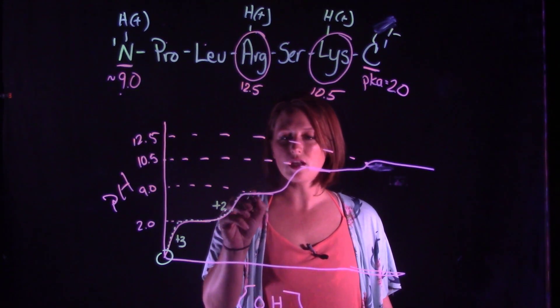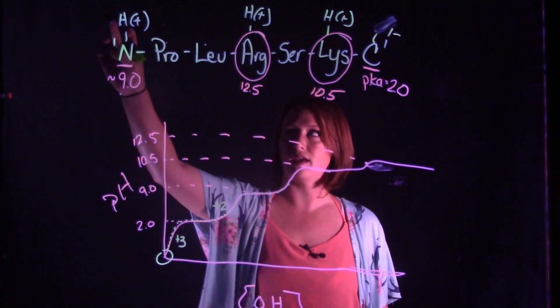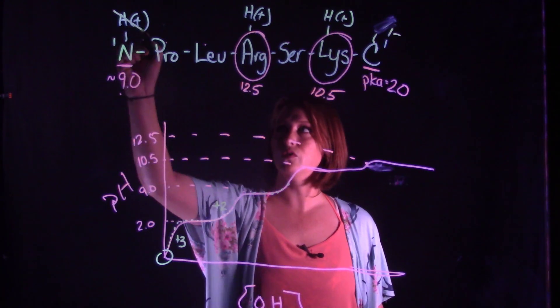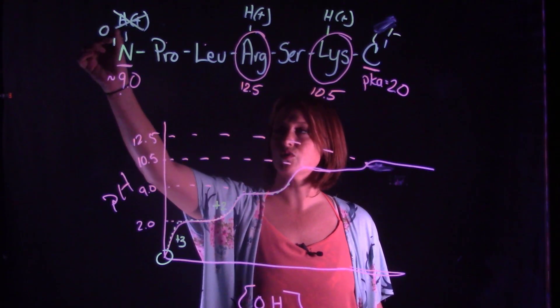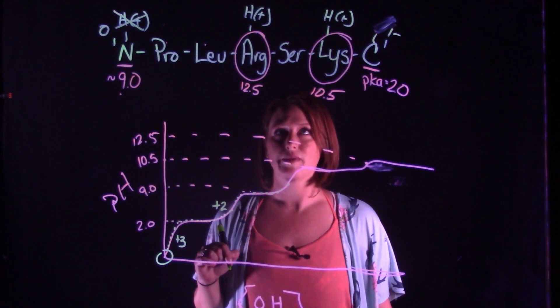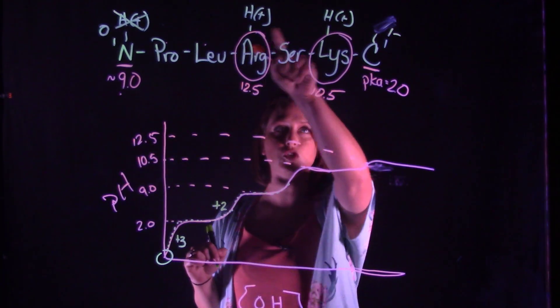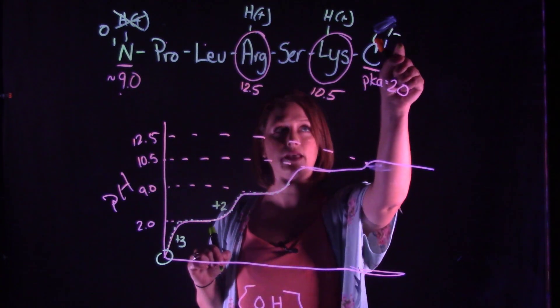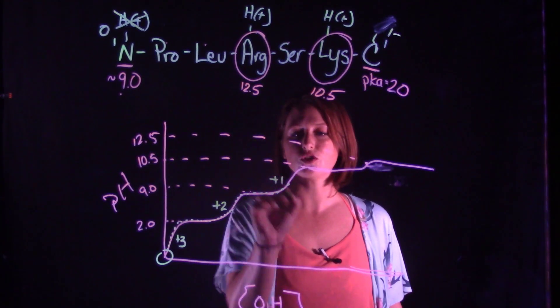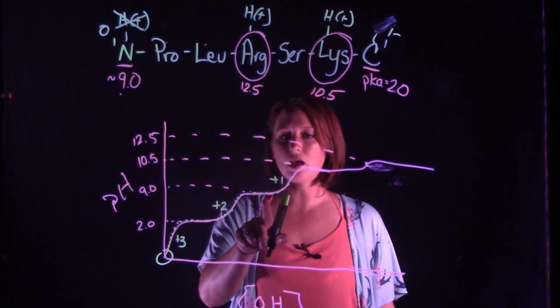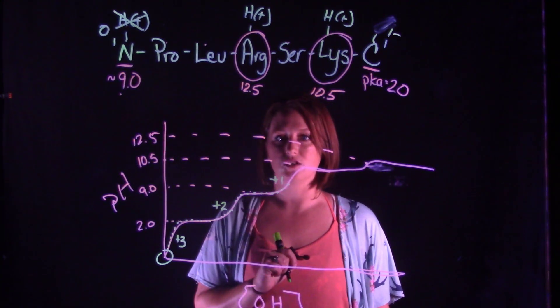As we continue to titrate above the pKa of that amino terminus, we will lose that proton, giving us a neutral charge on the amino terminus. However, we still have two positive charges and one negative charge, meaning we have an overall plus one charge when we get above the pKa of the N-terminus.